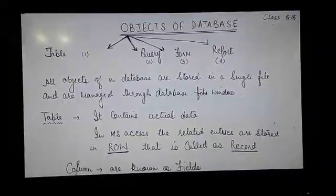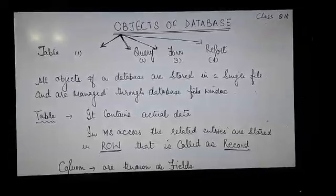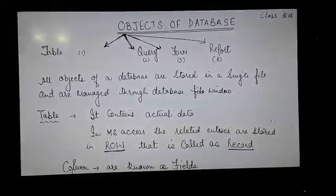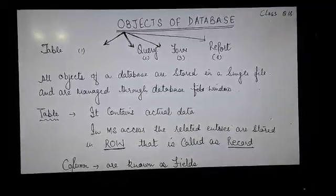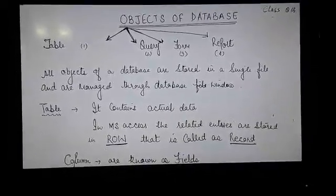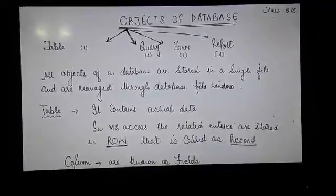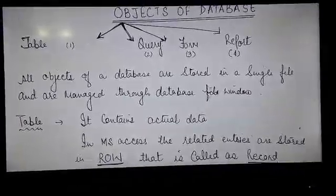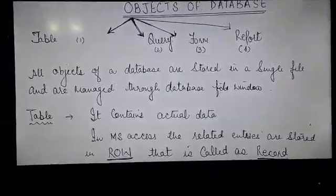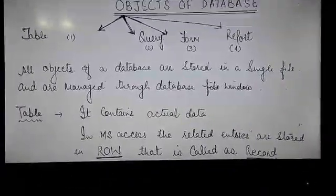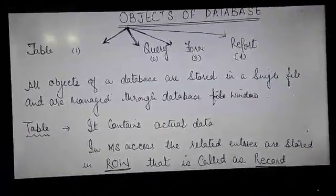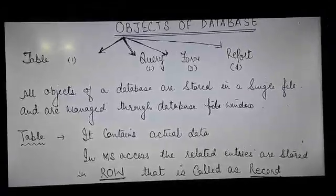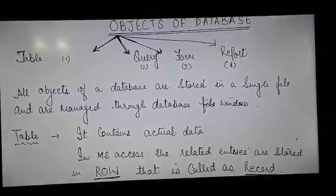We have 4 objects of a database. The first one is table, second is query, third is form, and the last one is the report. All objects of a database are stored in a single file and are managed through the database window.